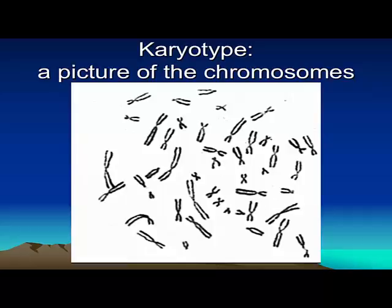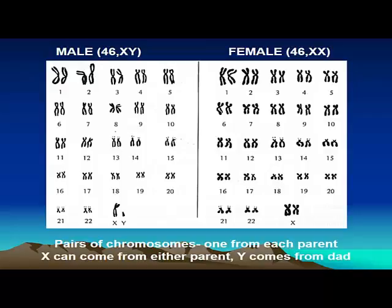If we open up one cell in the body, we see chromosomes. What the lab does is stain them and put them into a picture called a karyotype. In one cell in the body, we have 23 pairs of chromosomes. The first 22 are numbered 1 through 22, ordered from largest to smallest as you can see in the picture. The 23rd pair of chromosomes are labeled with either an X or a Y. Males typically have 46 chromosomes with an X and a Y, and females have 46 chromosomes with two Xs.